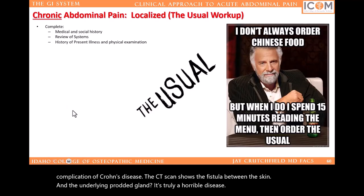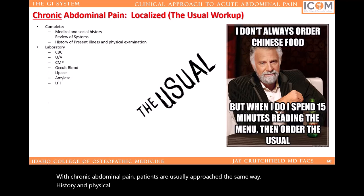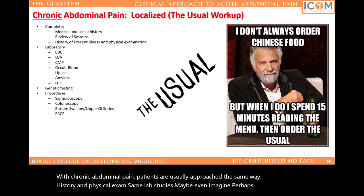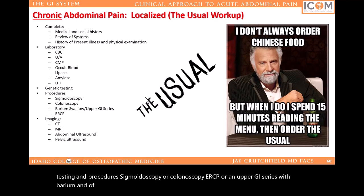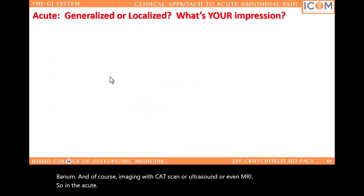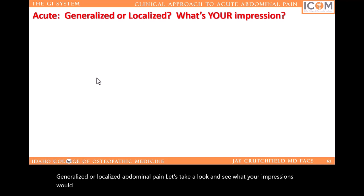With chronic abdominal pain, patients are usually approached the same way: history and physical exam, same lab studies, maybe imaging, perhaps even genetic testing, and procedures — sigmoidoscopy or colonoscopy, ERCP or an upper GI series with barium, and of course imaging with CT scan, ultrasound, or MRI. So in the acute, generalized, or localized abdominal pain, let's take a look and see what your impressions would be of patients presenting like this.